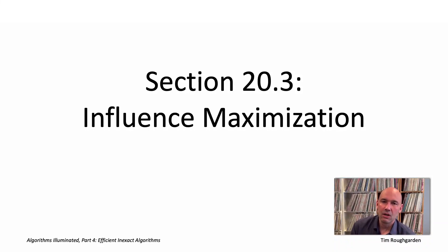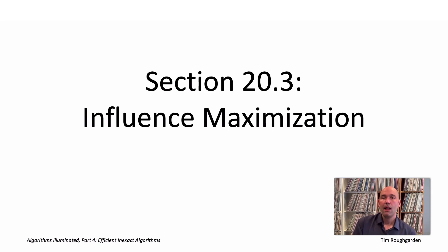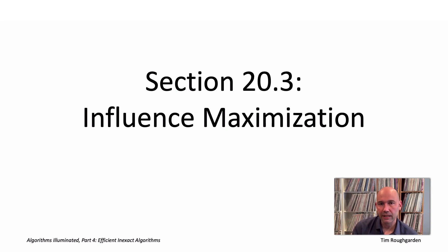Hi everyone, and welcome to this video that accompanies Section 20.3 of the book Algorithms Illuminated, Part 4. It's a section about the influence maximization problem. Now, both of the last couple of videos, we were looking at the greedy coverage algorithm, which is a fast heuristic algorithm for the maximum coverage problem. And that's a pretty classic algorithm.